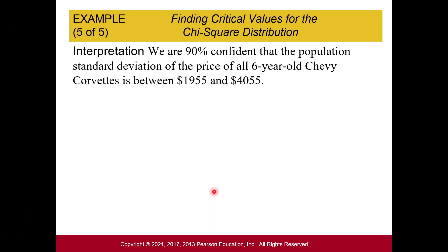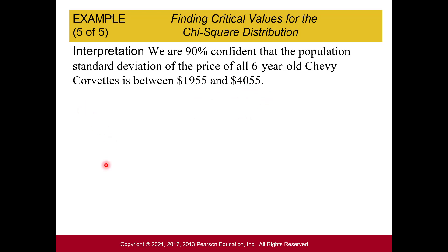Our interpretation: we are 90% confident that the population standard deviation of the price of all six-year-old Chevy Corvettes is between $1,955 and $4,055. That's it for this one — take care.